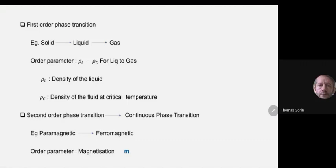The reduced temperature, let's call it small t, is defined as (T minus T_c) divided by T_c — with a modulus so it can be positive or negative. This basically tells you how far you are from the critical temperature. So instead of studying the phase transition with respect to temperature, I will study it with respect to the reduced temperature.